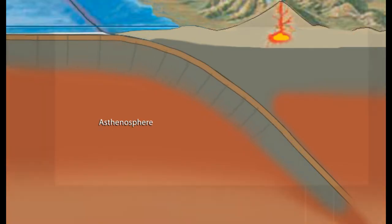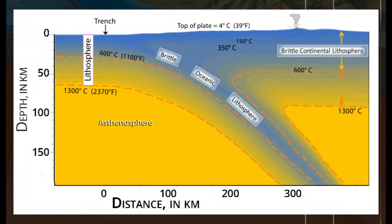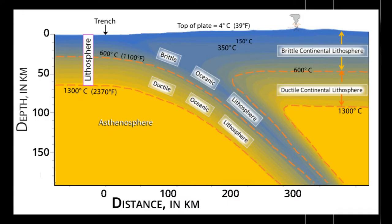Mathematical modeling again illustrates the temperatures within the subducting oceanic plate. In this example, lithospheric mantle rock in the subducting plate at 150 kilometers depth is 1,000 degrees cooler than the asthenospheric mantle at the same depth.